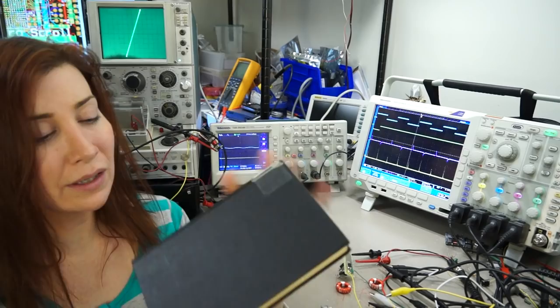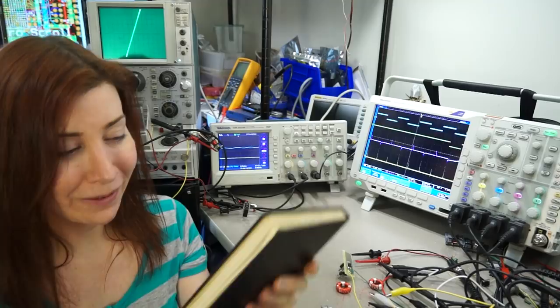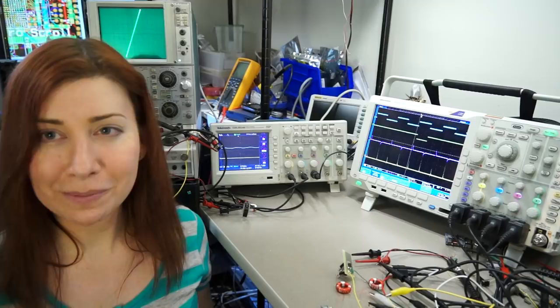It wasn't until I found this book, Square Loop Ferrite Circuitry by C.J. Quarterly from 1961 or 62, that I got enough information that I could recreate some of this stuff for you guys.